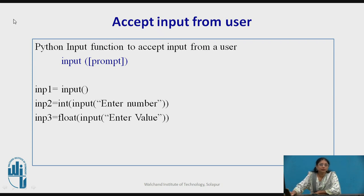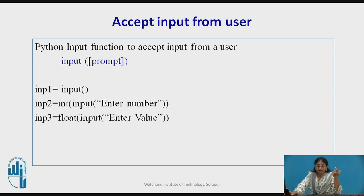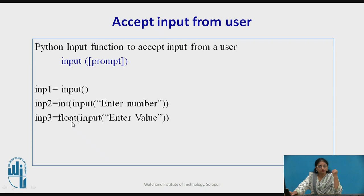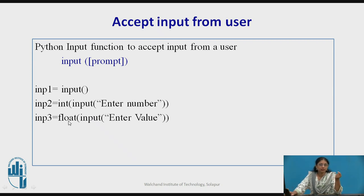The first form is the direct input function, which gives the input as a string. The second form uses a prompt like 'Enter the number', and then the value is converted into integer format. The third form converts to float. Whatever string is entered must be compatible — for example, if you enter 'a', 'b', 'c' and try to convert it to integer or float, it will give an error. So we must check what input is expected.